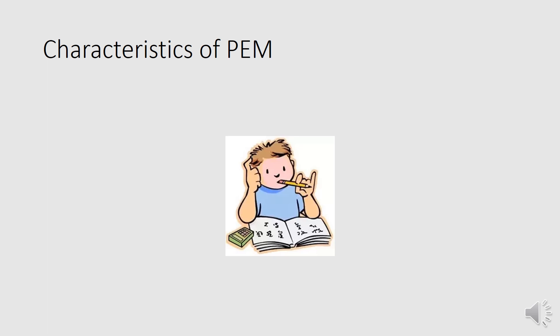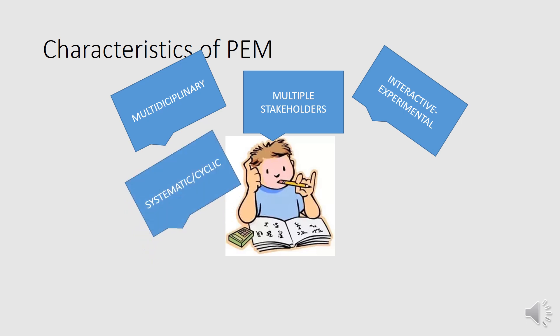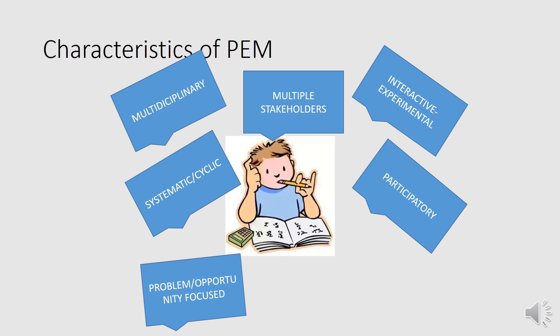Participatory environmental management has various characteristics, which is why it is more popular and successful. It is multi-disciplinary, dealing with various fields. It involves multiple stakeholders, meaning more people are interested in it. It is interactive and experiential, making it more learning-oriented. It is systematic and cyclic — not linear — focusing on what needs to be done rather than what should be done. It is truly participatory, problem- and opportunity-focused, considering inputs and outputs according to needs. It is also knowledge-based and recognizes multiple sources of knowledge.